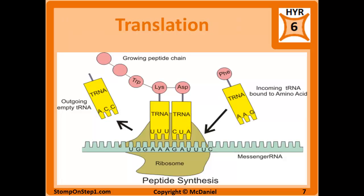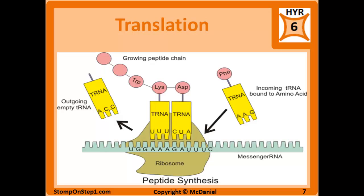Translation is the process by which RNA sequences, or mRNA, is converted into a set of amino acids to become protein. Each amino acid is coded for by a 3-nucleotide sequence called a codon. The tRNA, which carries the amino acid, has a complementary anticodon which recognizes the codon. The mRNA is read in a 5' to 3' direction. Translation begins at the start codon, AUG, and ends at a stop codon.